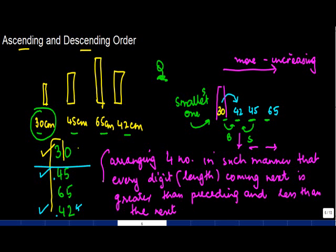This is what is called the ascending order or the increasing order. So what does this mean? This means arranging four numbers in such a manner that every digit coming next is greater than the preceding one. So 42 is greater than 30, 45 is greater than 42, 65 is greater than 45. And less than the next, so if I talk about 30, it is less than 42 the next digit. If I talk about 42, it is less than 45 the next digit and if I talk about 45, it is less than the next digit.